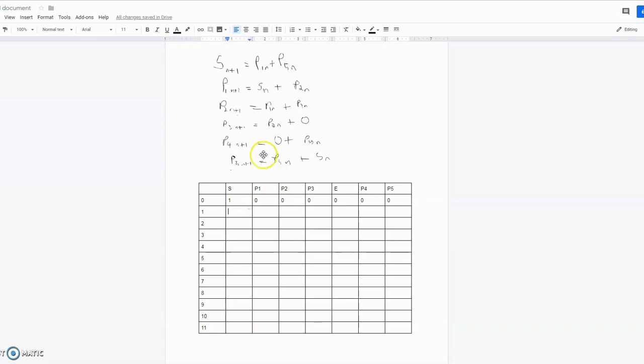After one step, we have that S(n+1) = P1(n) + P5(n). Both of these are 0, so S(1) = 0. And P1(n+1) = S(n) + P2(n). So that's equal to S plus P2, which is 1.